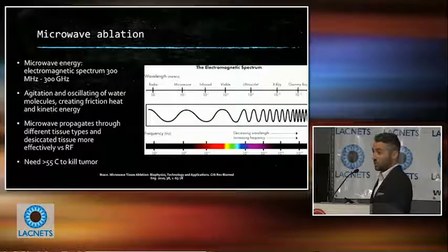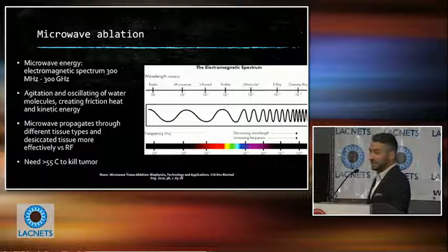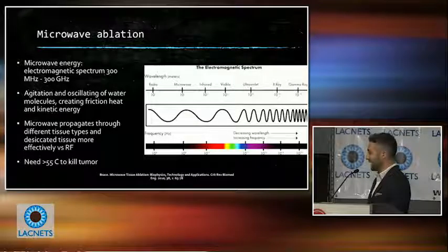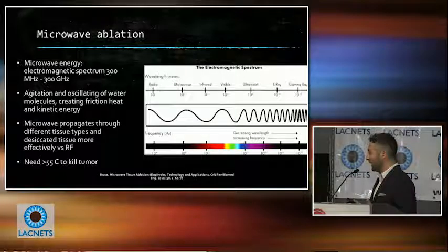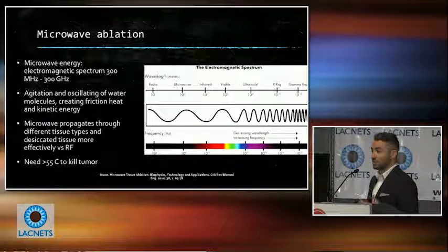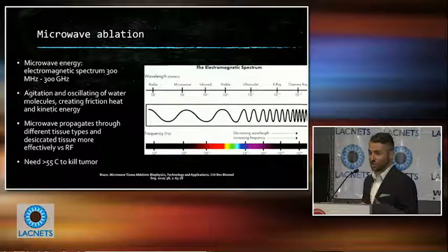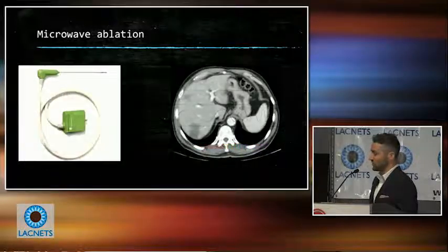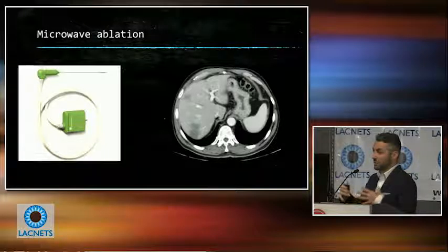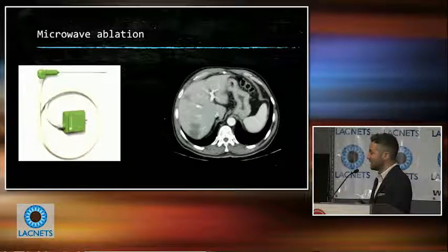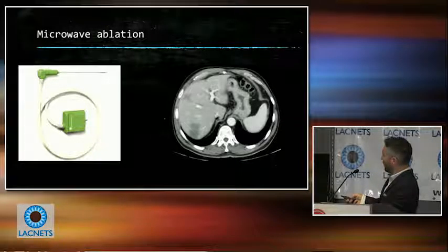Microwave ablation is a really great technology. We use microwave energy to cause heat, which causes agitation and oscillation of water molecules, creating friction and kinetic energy as heat. The microwave propagates through different tissue types, including desiccated tissue — which is actually a problem with RFA, since desiccated tissue has high impedance and prevents the circuit from working properly. So with microwave ablation, you get bigger ablation zones and it's more efficient.